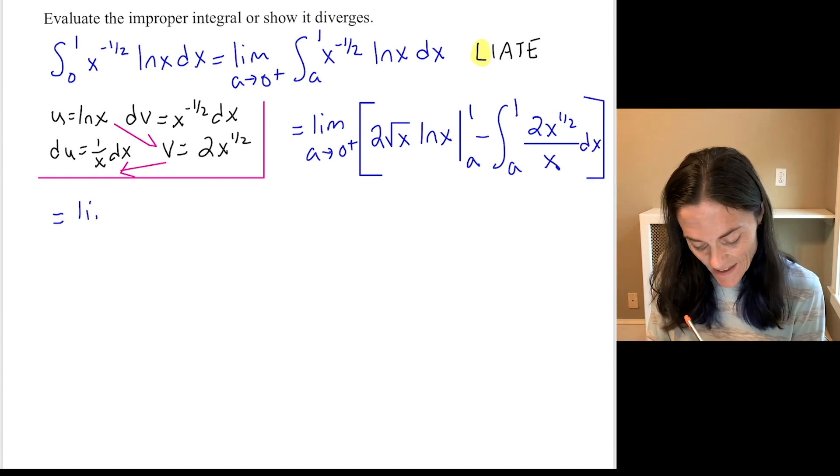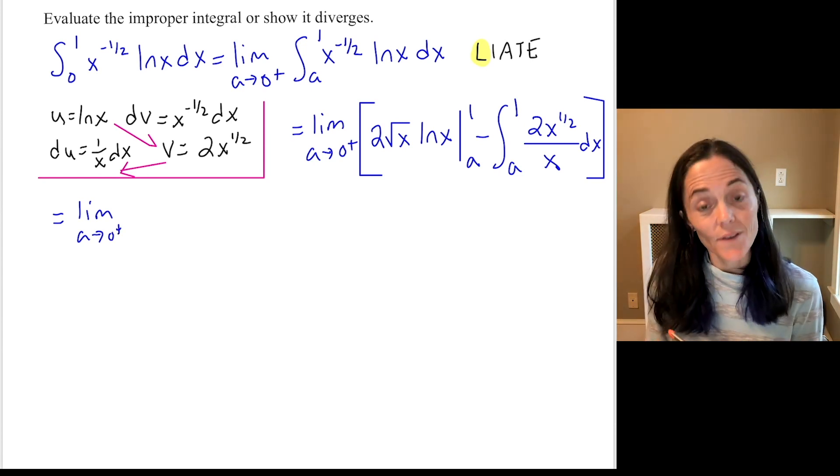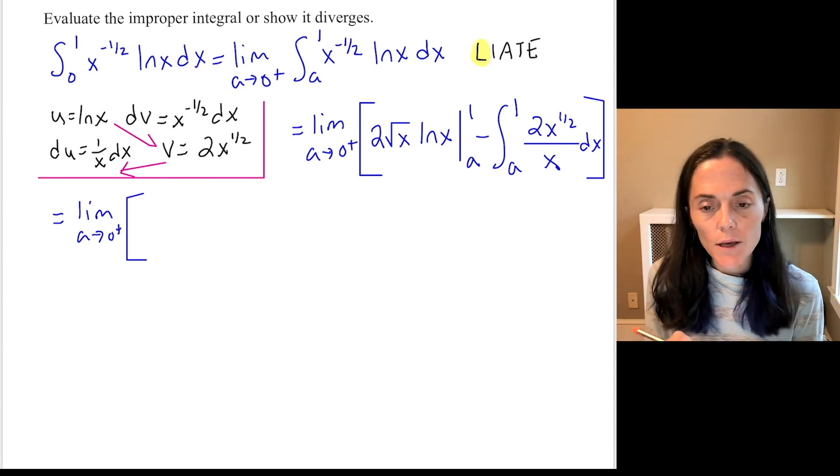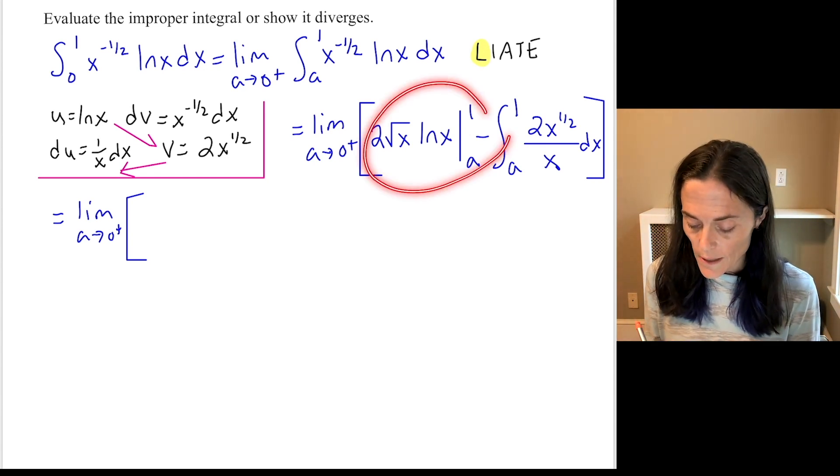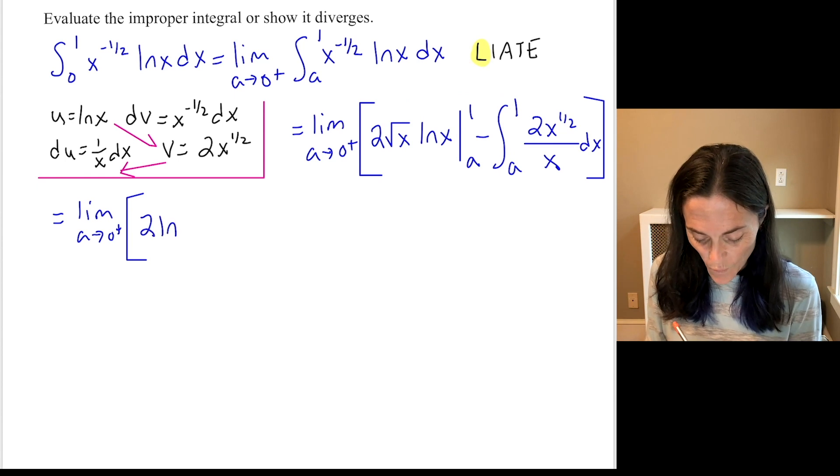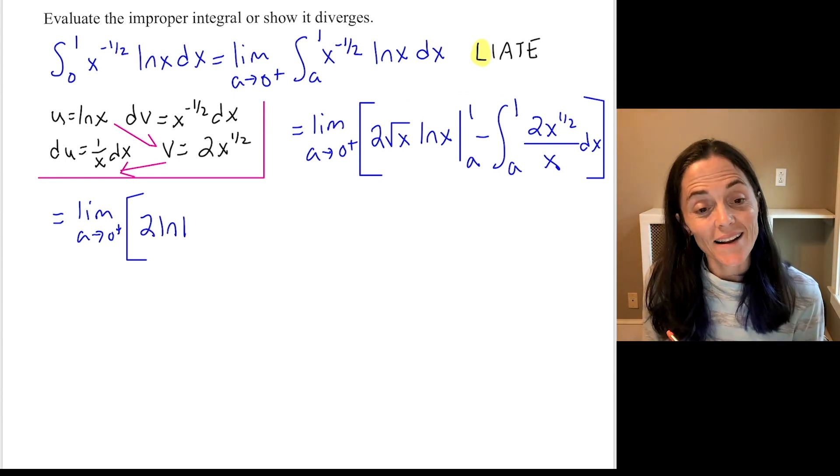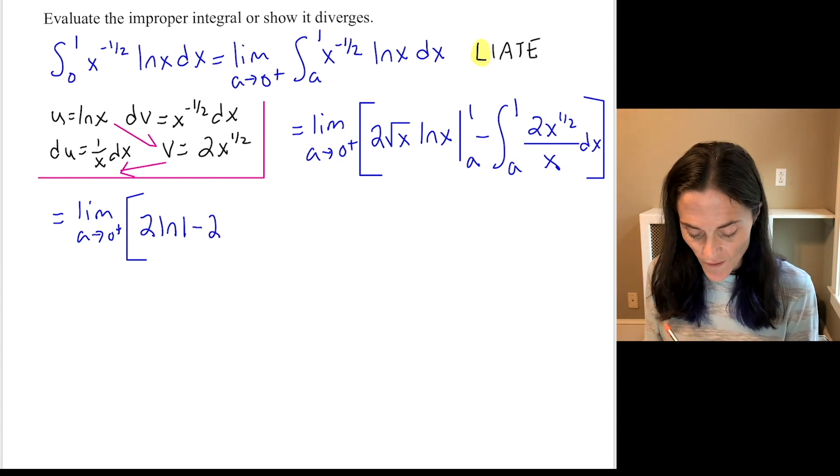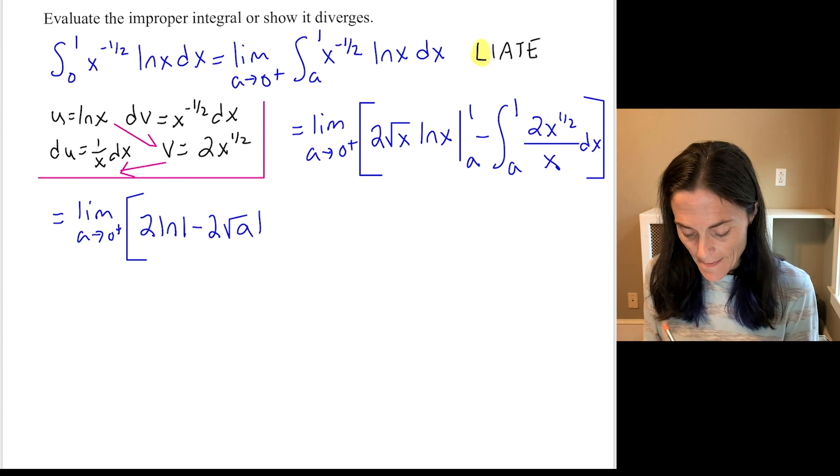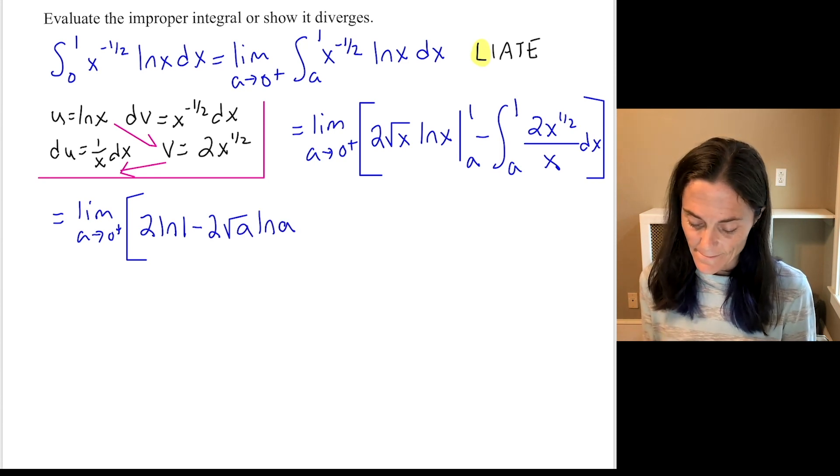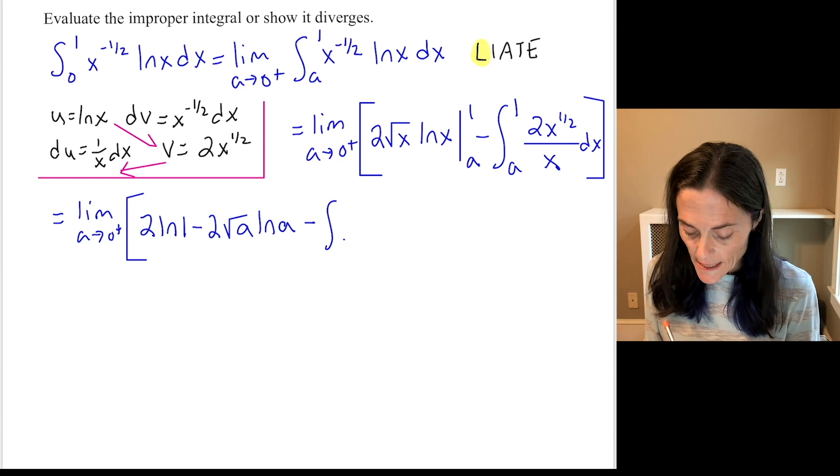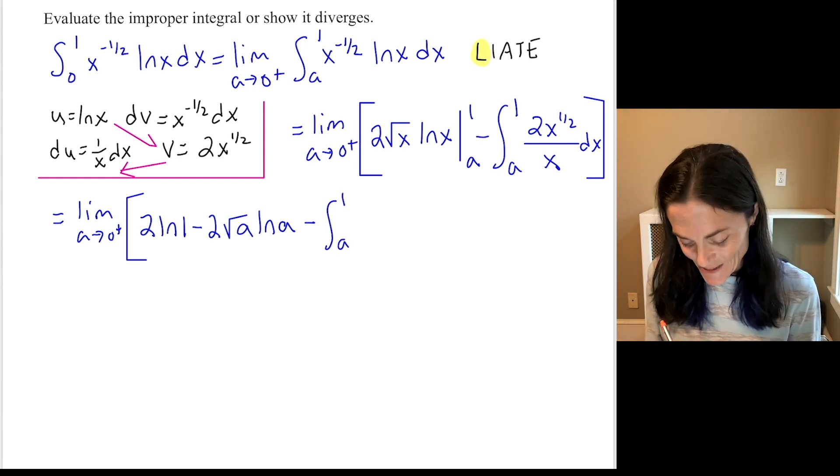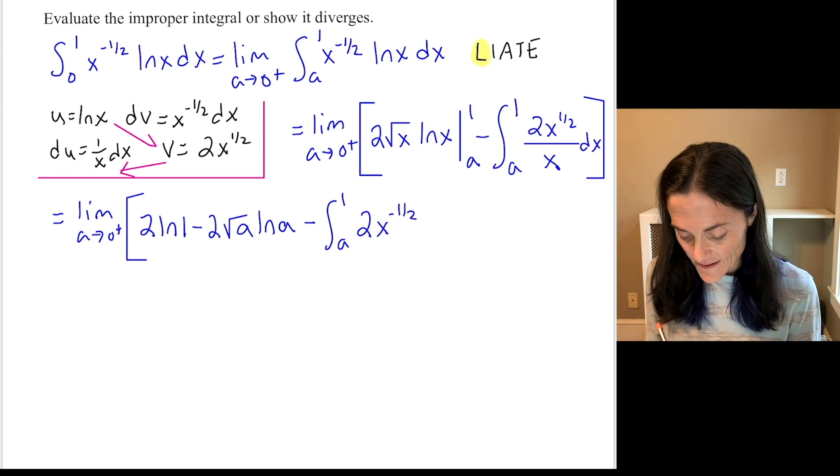I just keep recopying the limit. In fact, this is the very last thing I do. I am in the process right now of calculating my definite integral. And I can go ahead and evaluate this part. We have 2, natural log 1. In fact, the natural log 1 is 0. Subtract off, we have 2 square root of a ln a. And then we have a minus. You see, this is the integral from a to 1. This is 2x to the minus 1 half. This we can integrate dx.